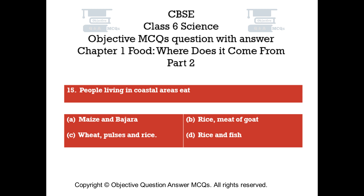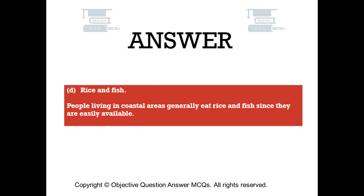Question number 15. People living in coastal areas eat: Option A: Maize and bajra. Option B: Rice and meat of goat. Option C: Wheat, pulses and rice. Option D: Rice and fish. The right answer is Option D. People living in coastal areas generally eat rice and fish since they are easily available.